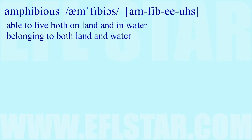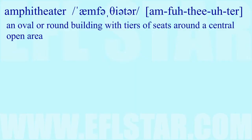Amphibious: able to live both on land and in water, belonging to both land and water. Amphitheater: an oval or round building with tiers of seats around a central open area.